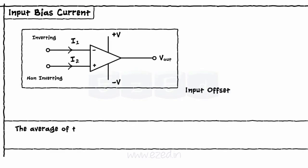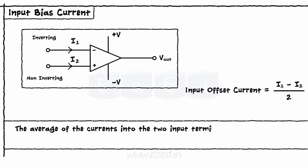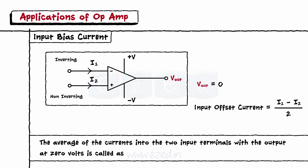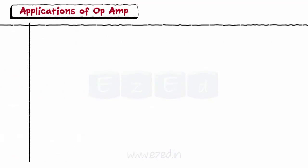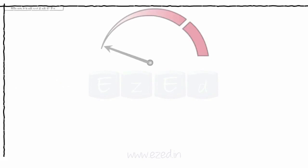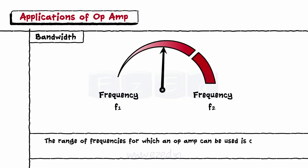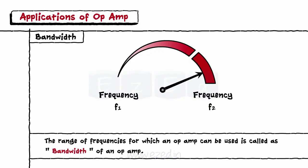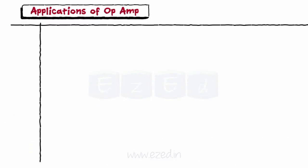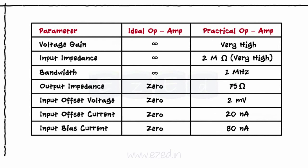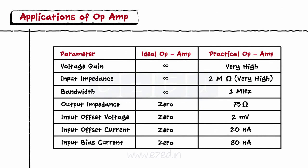The sixth term is input bias current — the average of the currents into the two input terminals with the output at zero volts. The last term is bandwidth — the range of frequencies for which an op-amp can be used. When we differentiate the ideal op-amp from the practical op-amp, we find some change in the parameter values, which is represented by the following table.